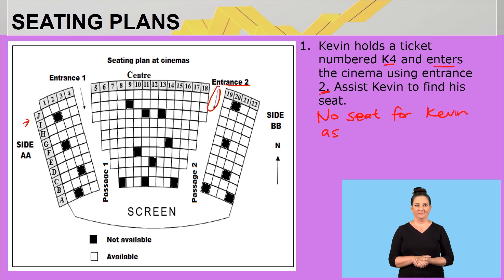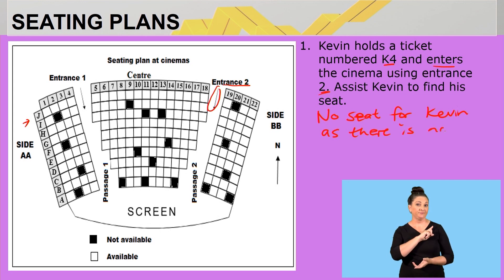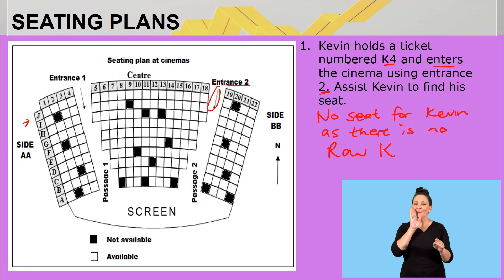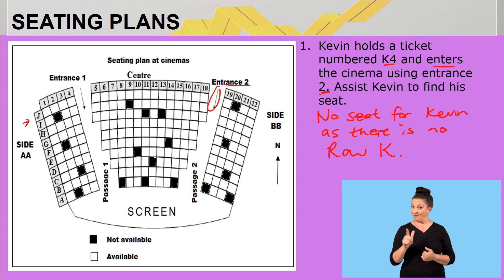To write that down: there will be no seat for Kevin as there is no row K — not J, J is actually our last row. There is no row K. We just want to see if you are able to interpret the seating plan given to you. There is no row K. Let's move on to the next question.